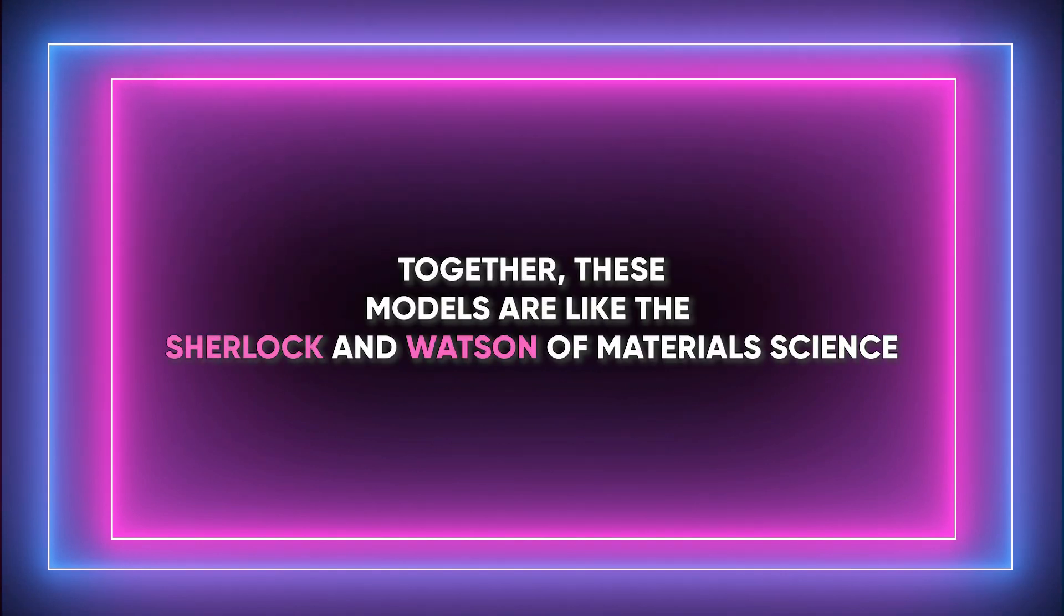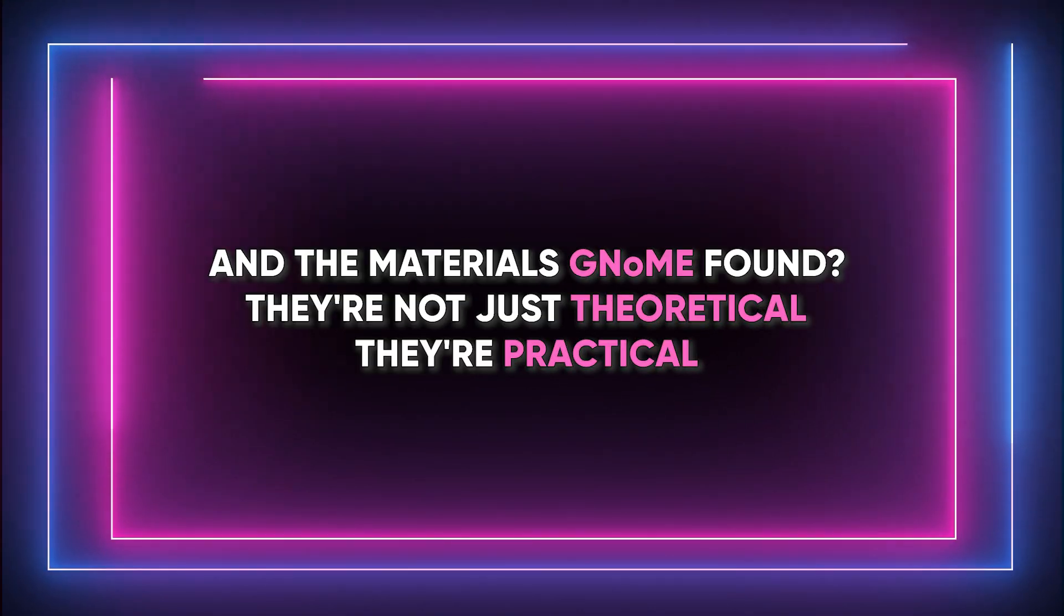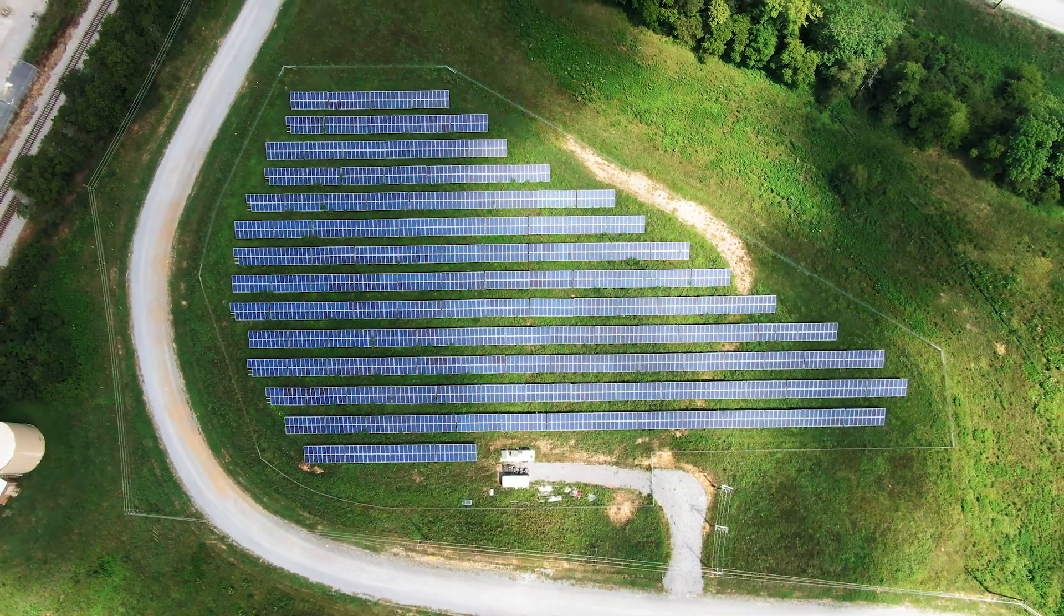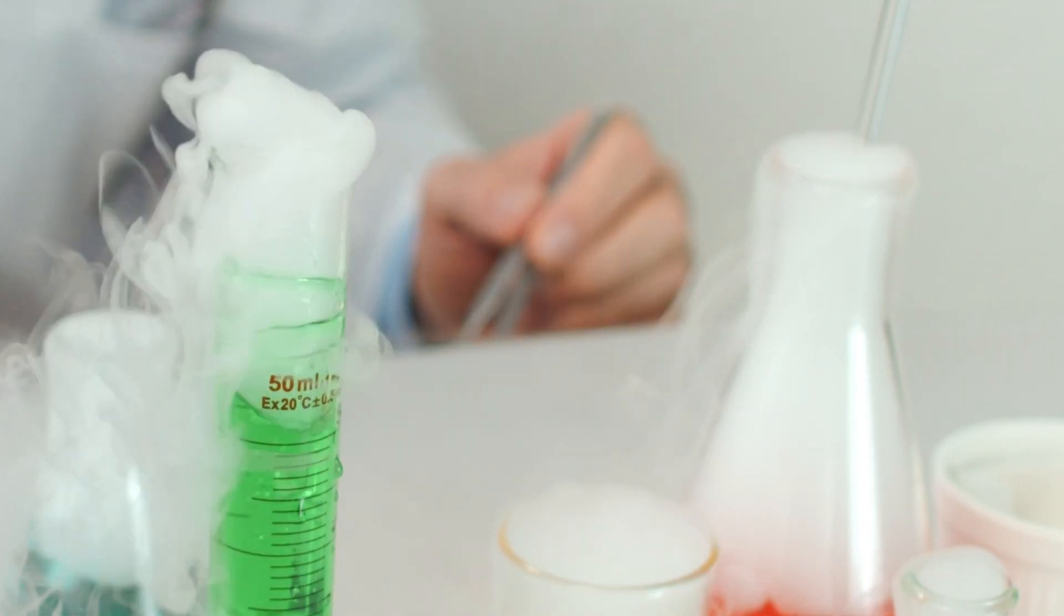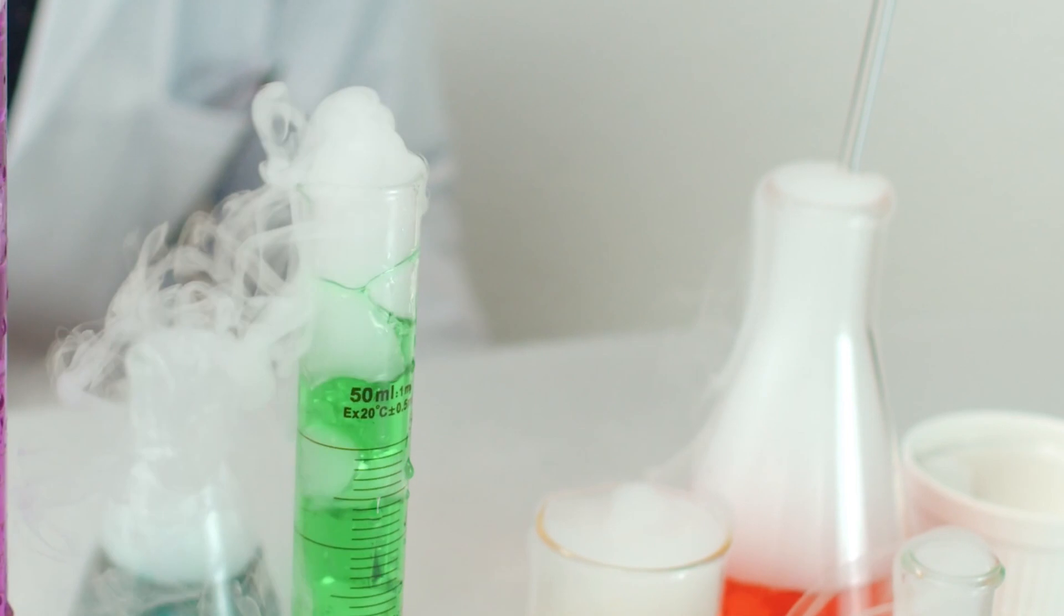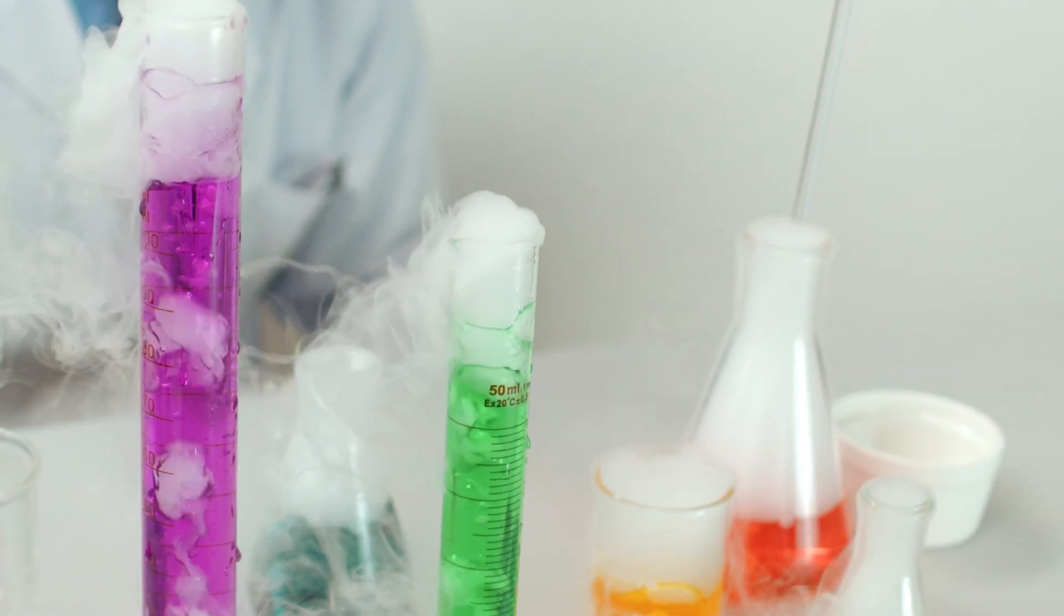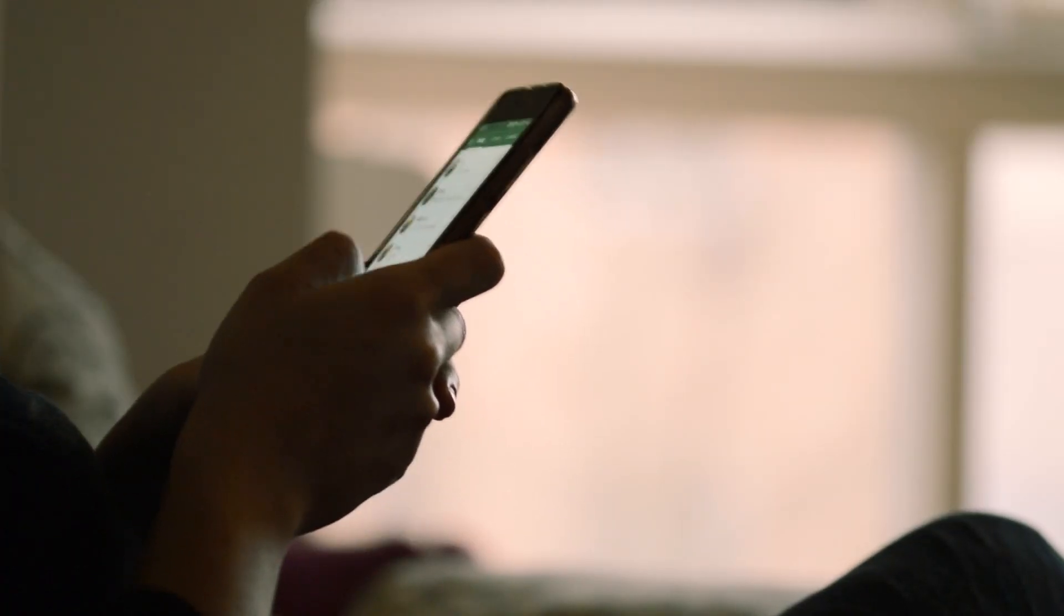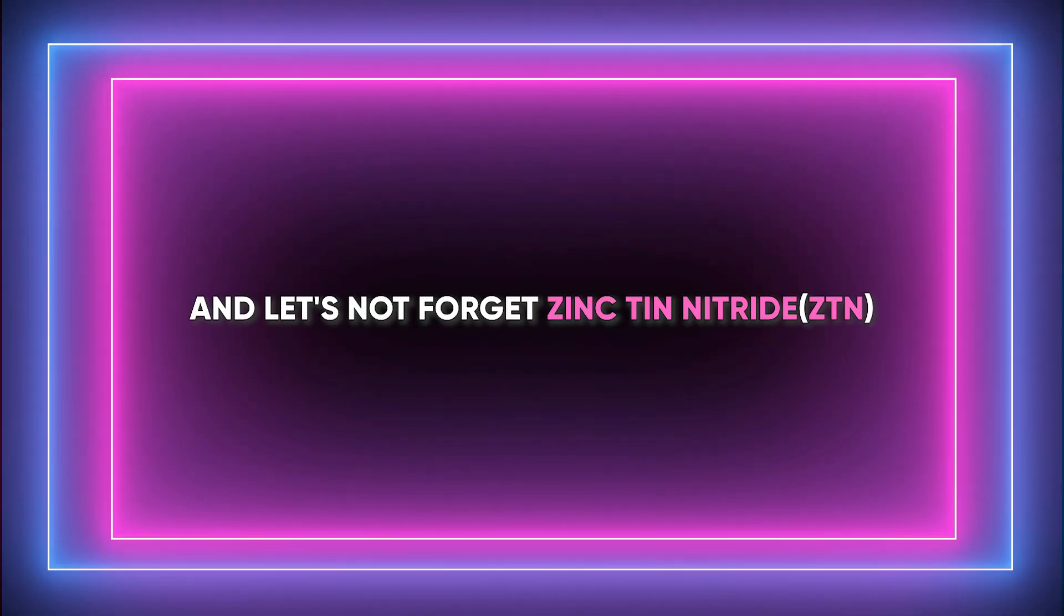And the materials GNOME's found, they're not just theoretical, they're practical. We're talking about stuff for solar cells, batteries, and computer chips, like copper zinc tin sulfide (CZTS), a real champ for thin film solar cells, or lithium iron phosphate for lithium ion batteries, which are in everything from your phone to electric cars. And let's not forget zinc tin nitrate (ZTN), a potential revolution for computer chips.